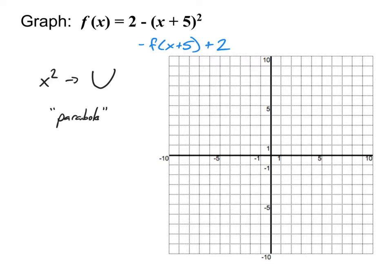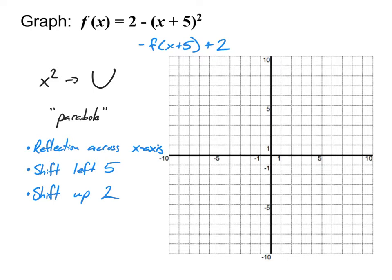The negative is being applied to f, which means it's flipping the graph upside down — a reflection across the x-axis. The plus 5 inside with the x means it's shifting in the x direction, and plus shifts left, so the graph shifts left 5. The plus 2 at the end shifts the entire graph up 2. Knowing that, I have my general parabola shape but reflected across the x-axis, opening downward, with the vertex shifted left 5 and up 2.